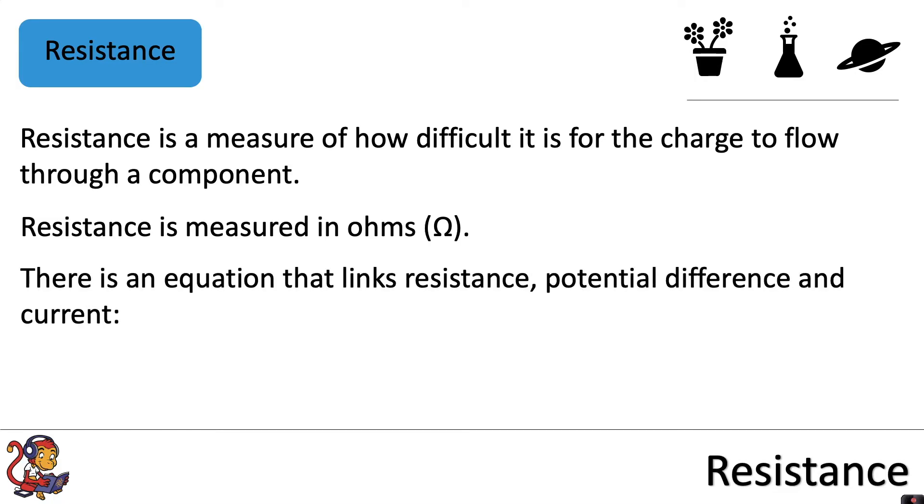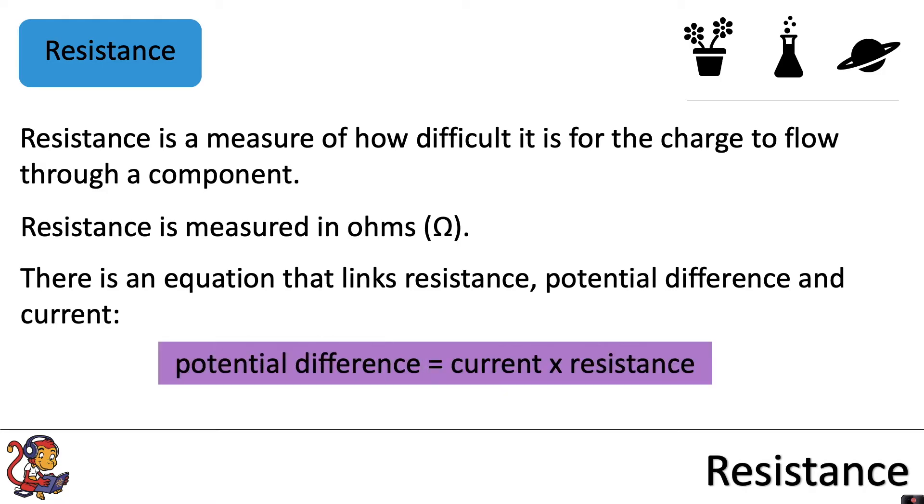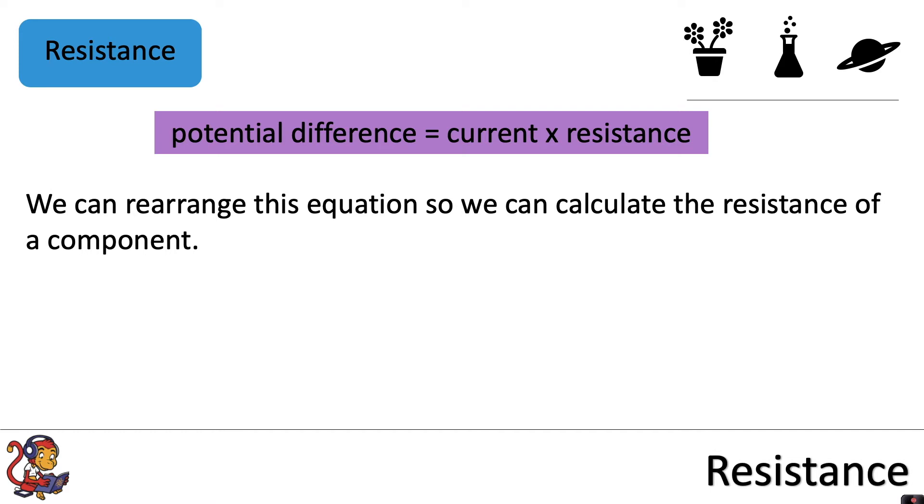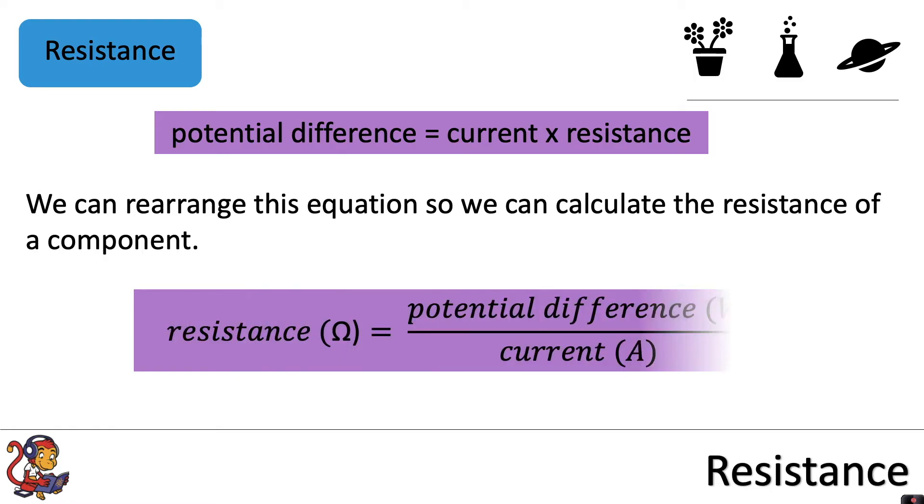There is an equation that links resistance, potential difference and current, and that equation is potential difference equals current times resistance. We can rearrange this equation so we can calculate the resistance of a component. Resistance equals potential difference divided by current.